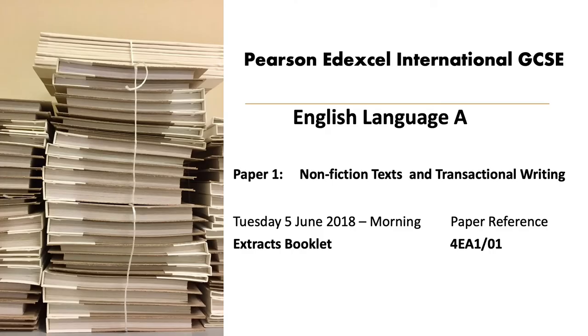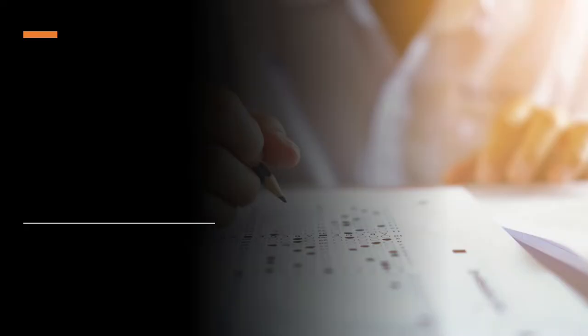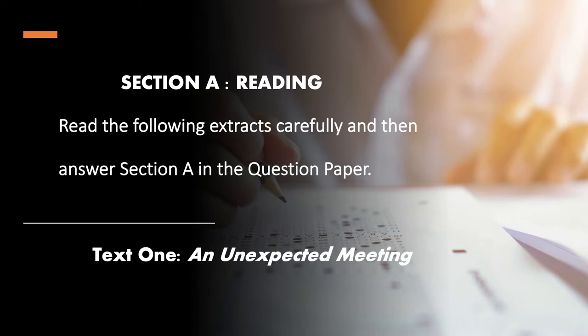This is the paper we are discussing today — the June 2018 morning paper 1, nonfiction texts and transactional writing. Section A reading gives you two non-fictional texts: one is an unseen text while the other is taken from your anthology. Text one talks about how the writer is trying to rescue a solitary penguin, and text two is based on the same theme — how Helen Macdonald meets for the first time the goshawk she has adopted after her father's death.